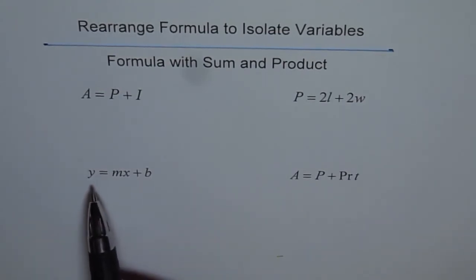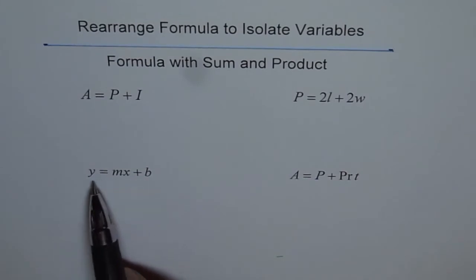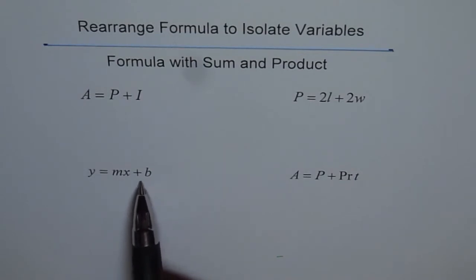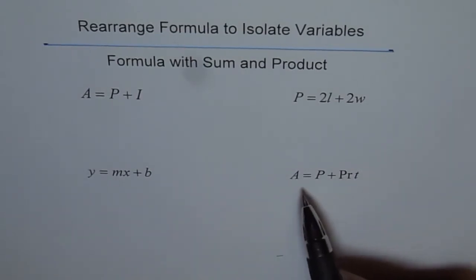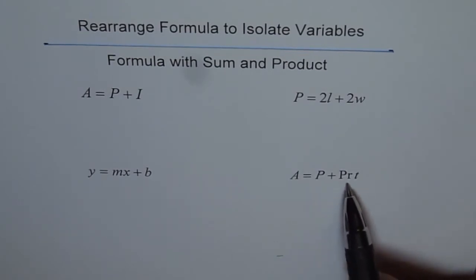This is the equation of a line, Y equals to MX plus B, where X and Y are the coordinates of any point on the line. M is the slope, and B is Y-intercept. This is a formula for amount equals to principal amount plus interest, which is written as P, which is principal, times rate of interest, times number of years. T for time in number of years.